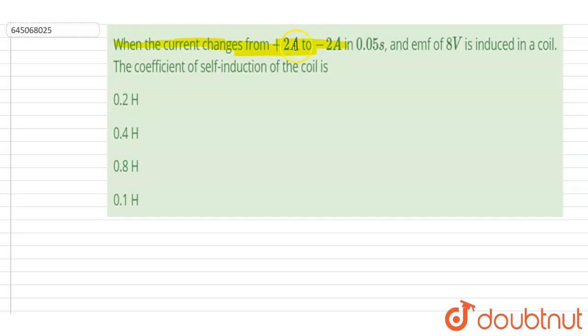from plus 2 ampere to minus 2 ampere in 0.05 second, the EMF of 8 volt is induced in the inductor. The coefficient of self-inductance of the coil is - so if I draw an inductor